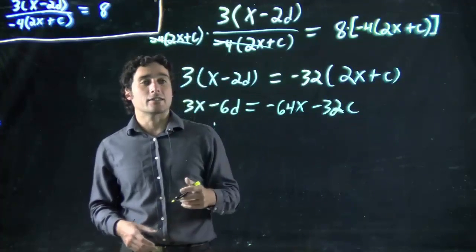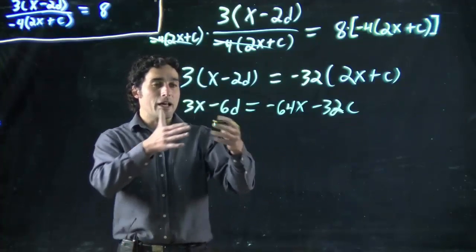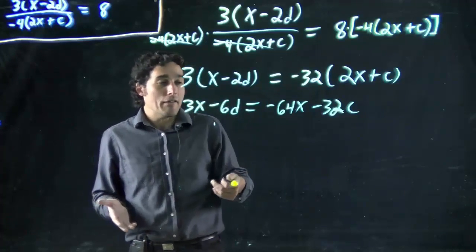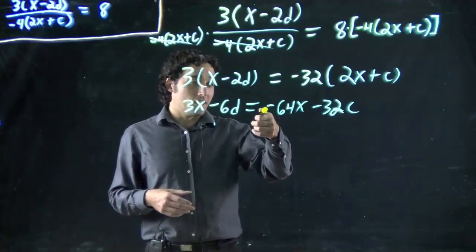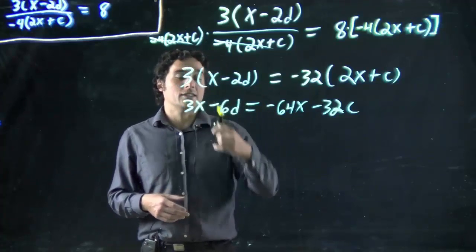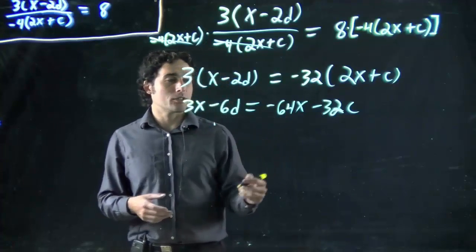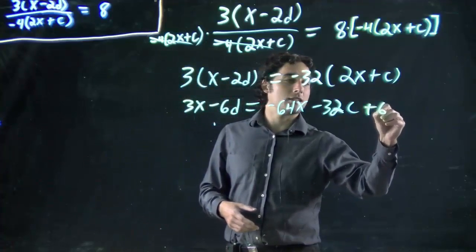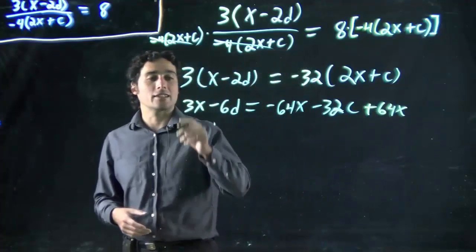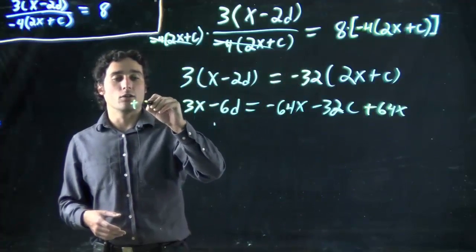Now I want to combine the x's. As always, it doesn't matter which way I go. Convention, a lot of people solve to the left, but in this case I look and see a minus here, so I want to bring it to this side. I'd rather work with pluses personally. So I'm going to add 64x to both sides, cancel it on that side, and bring it over.